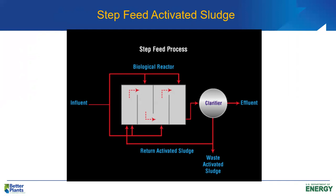In a step feed process operating in step feed mode, we typically have four compartments provided by baffling in the basin. We can bring in one-fourth of the influent to each compartment. This smooths out the organic loading on the reactor. Importantly, the return activated sludge is always brought back to the front of the reactor — it's the influent that is distributed at different points along the reactor.